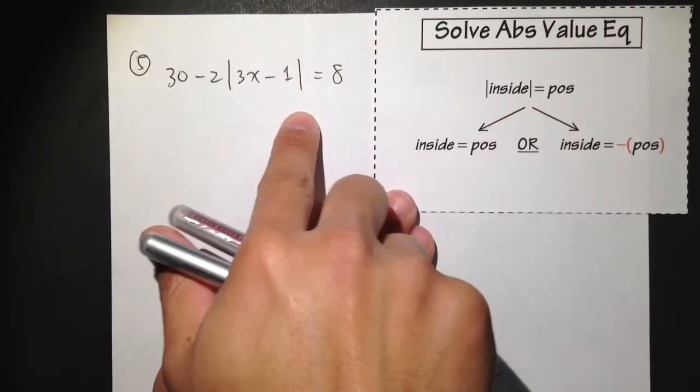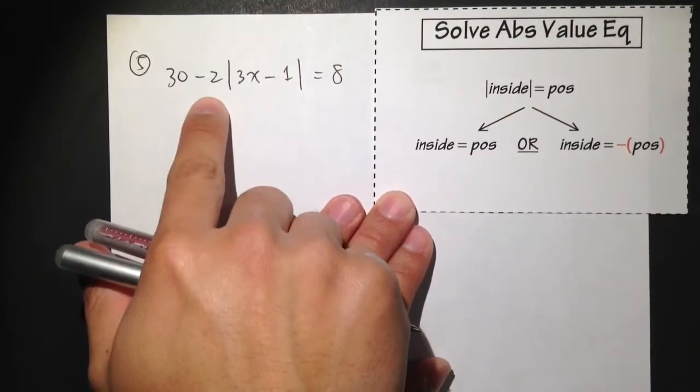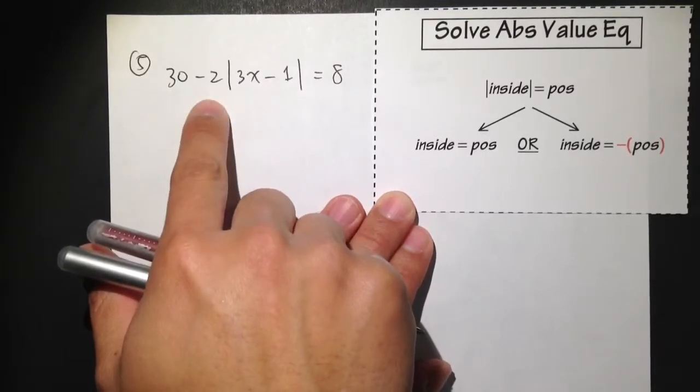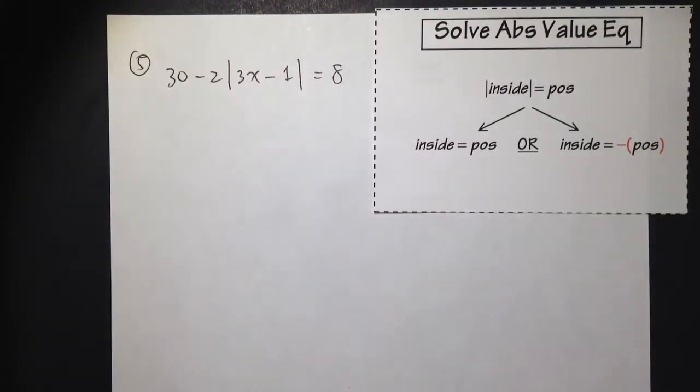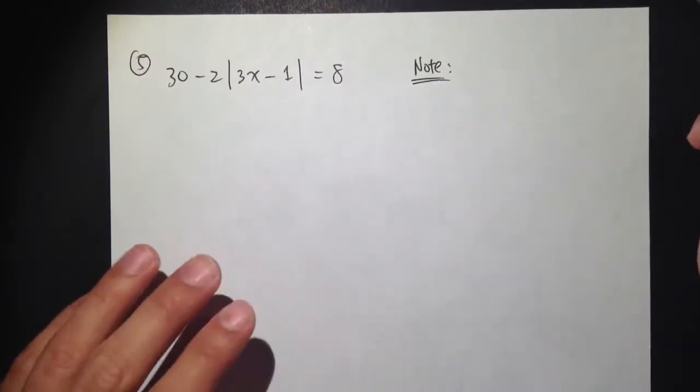Before I solve this equation, we see that 30 minus 2, but do not just do 30 minus 2 and say that's equal to 28. Why is that? Let me give you guys an example on the side first.